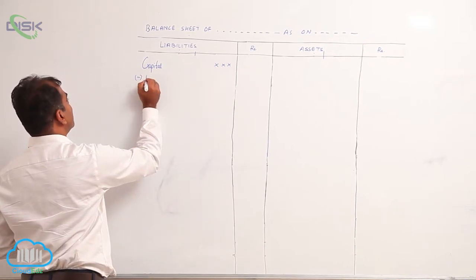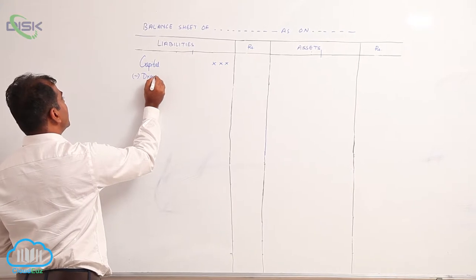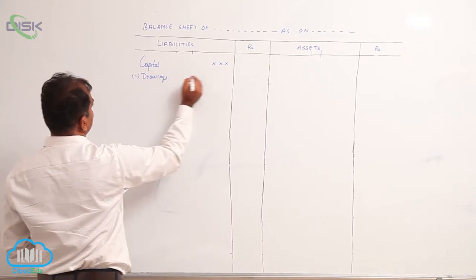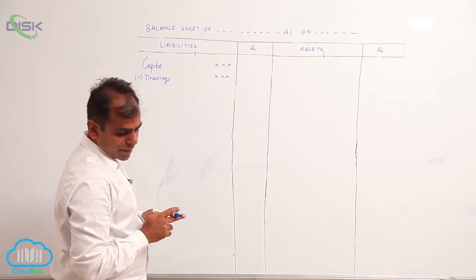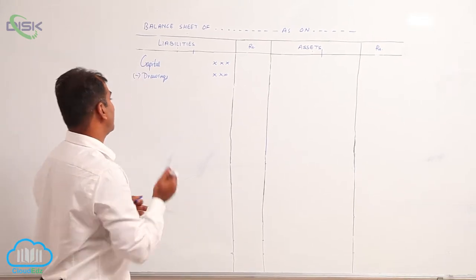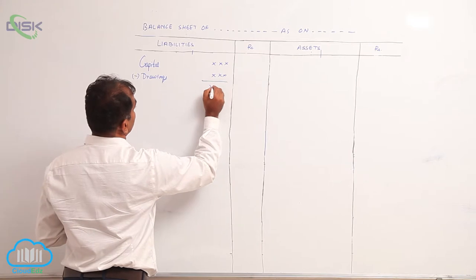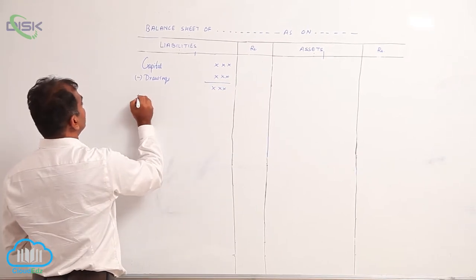If drawings are given, we subtract drawings from capital. Then similarly, if we have net profit, we add net profit to the capital.